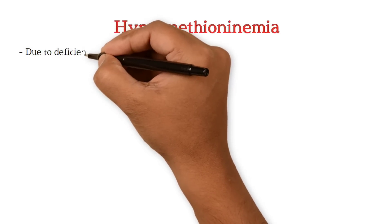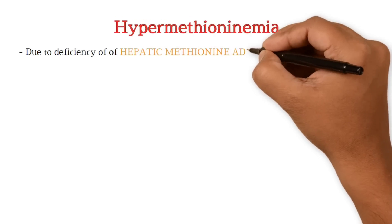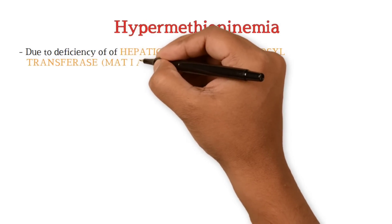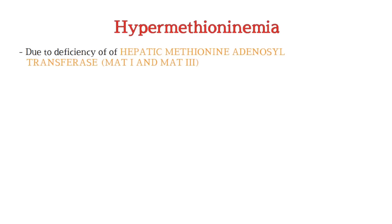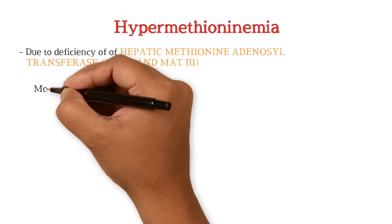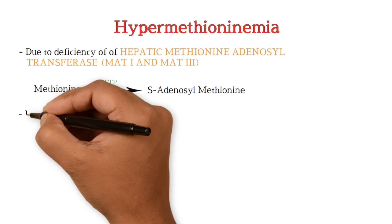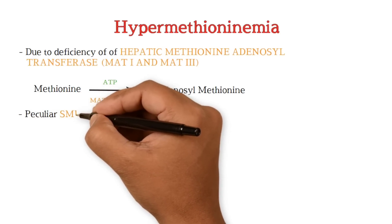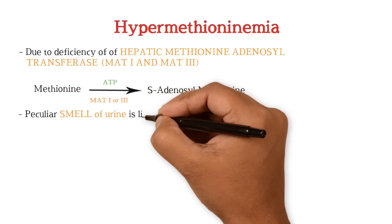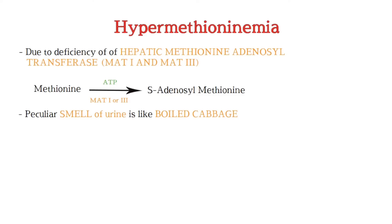Next we will see hypermethioninemia. It is due to deficiency of hepatic methionine adenosyl transferase, short form MAT. Isoenzymes MAT1 and MAT3 are present in the liver and convert methionine to SAM, S-adenosyl methionine, the active form of methionine. In this disease, the characteristic smell of urine is like boiled cabbage. As an MCQ tip: two conditions give a smell like boiled cabbage — hypermethioninemia and tyrosinemia.